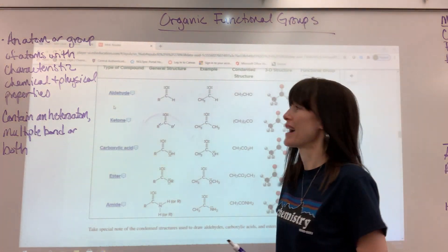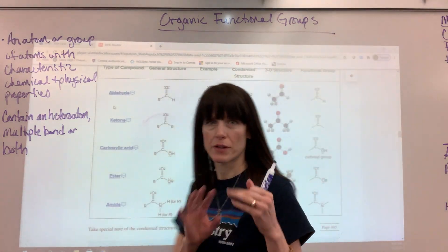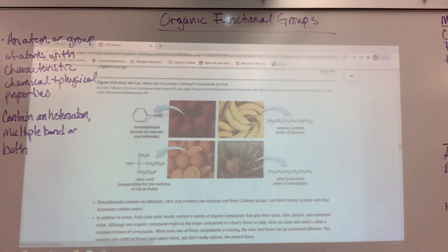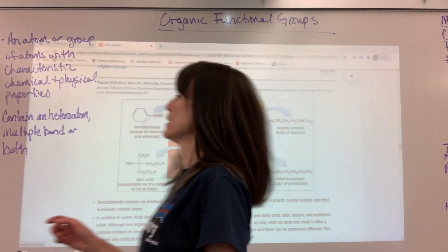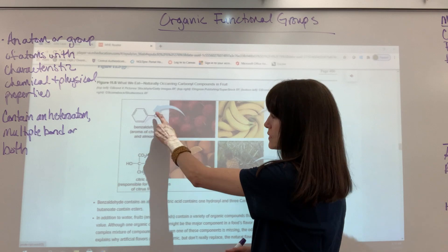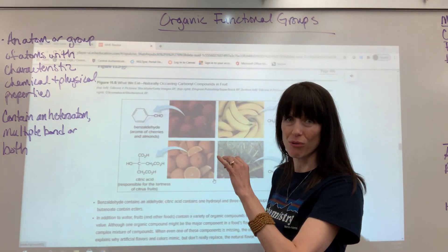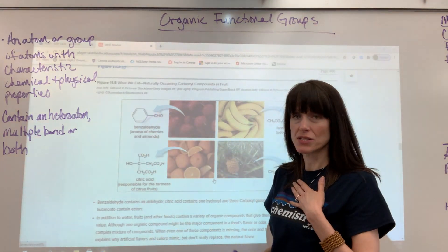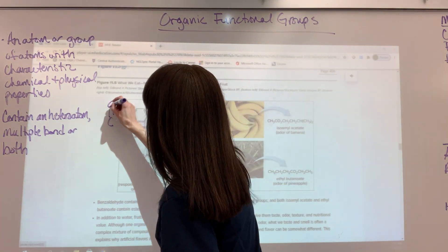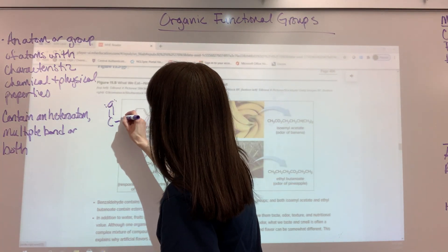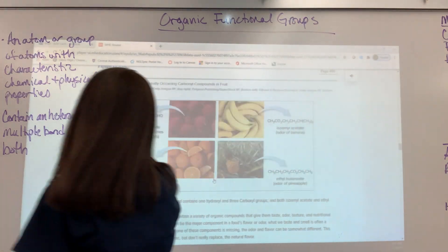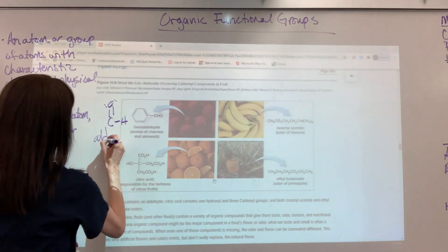Let's do some practice with double-bond functional groups. Looking at benzaldehyde — notice that CHO at the last carbon indicates a double-bonded oxygen with a hydrogen. That's an aldehyde.